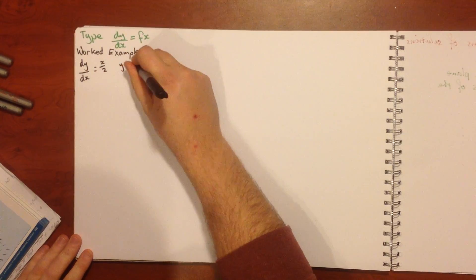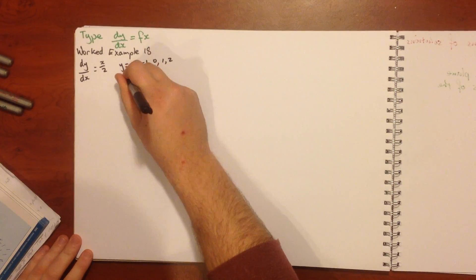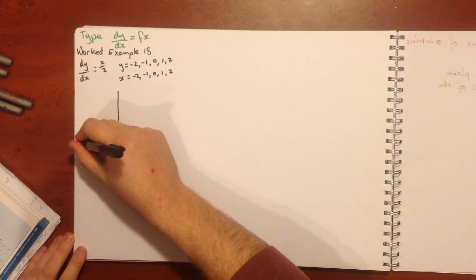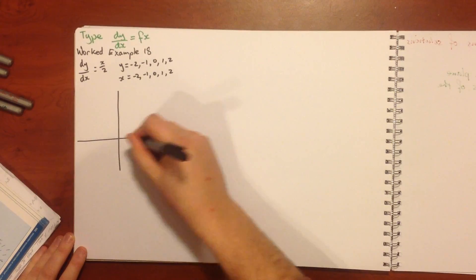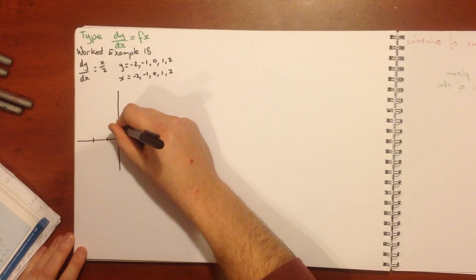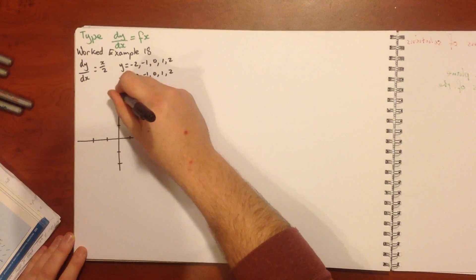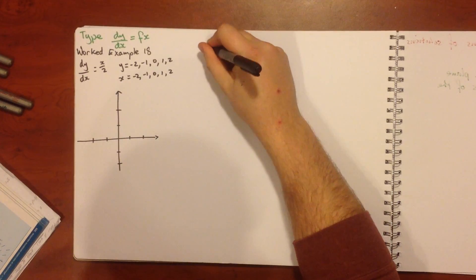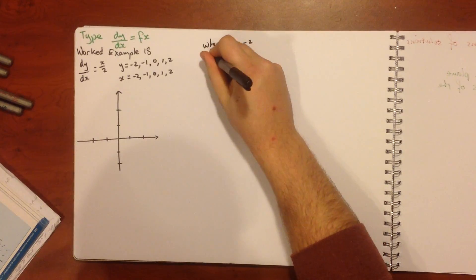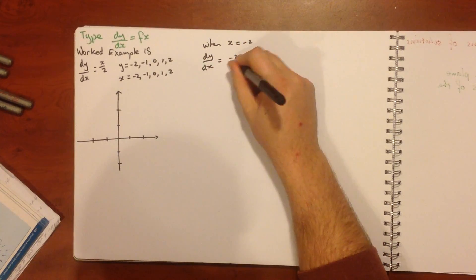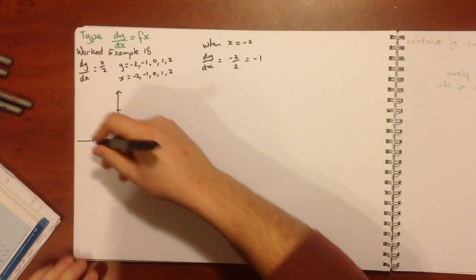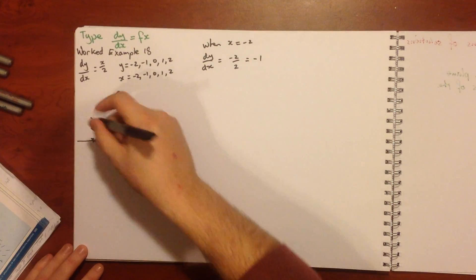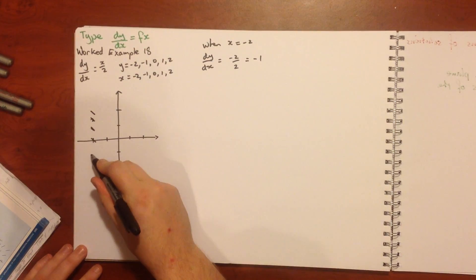We're doing this for y equals minus 2, minus 1, 0, 1, and 2, and x equals minus 2, minus 1, 0, 1, and 2. We need our axes. We look at our equation and substitute in our x values. When x equals minus 2, dy/dx equals minus 2 on 2, which equals minus 1. I only need to worry about at the points that I was asked for.